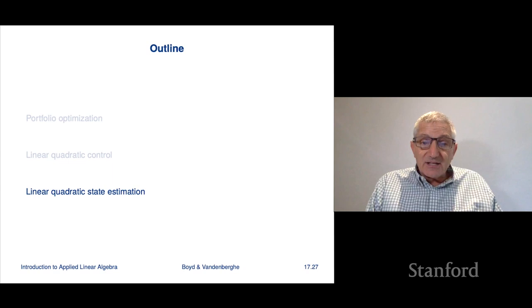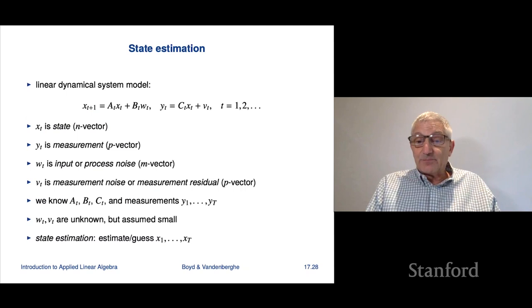Our last application of constrained least squares is linear quadratic state estimation. Like the other two applications, you can take an entire course on nothing but this, and it's also like the other two, very widely used in a lot of application areas. That's got other names like Kalman Filter or something like that, but it's used everywhere.